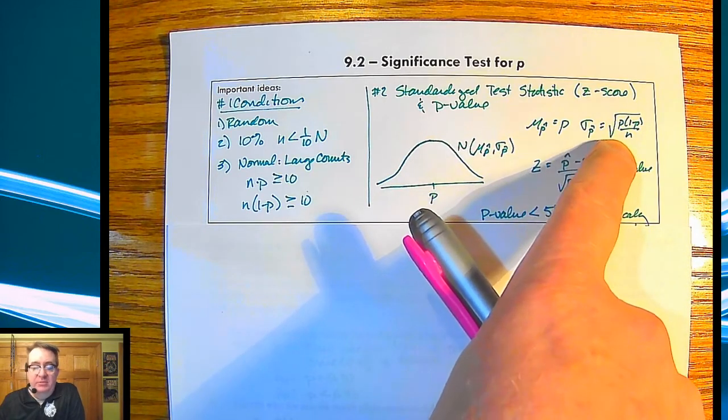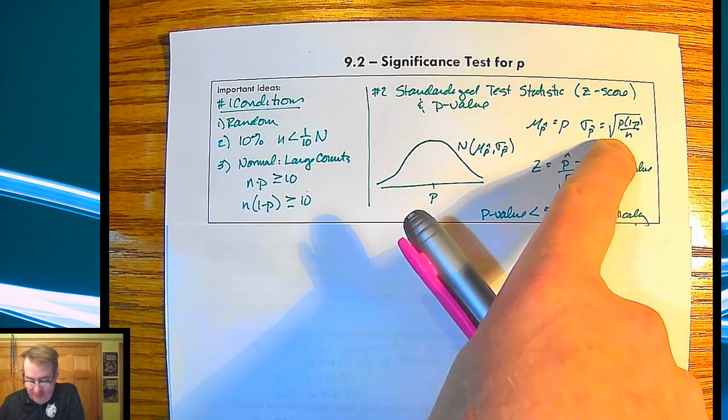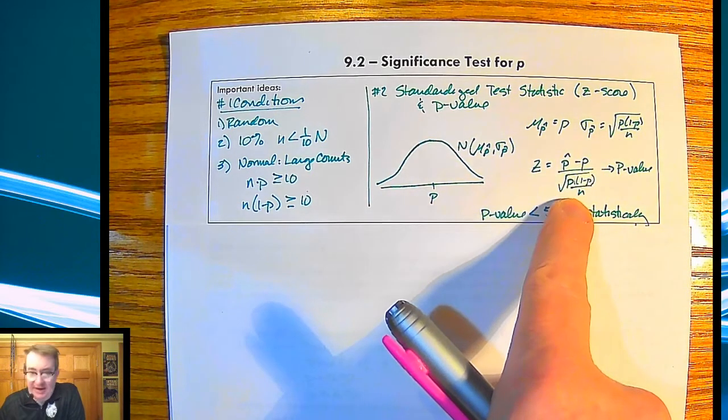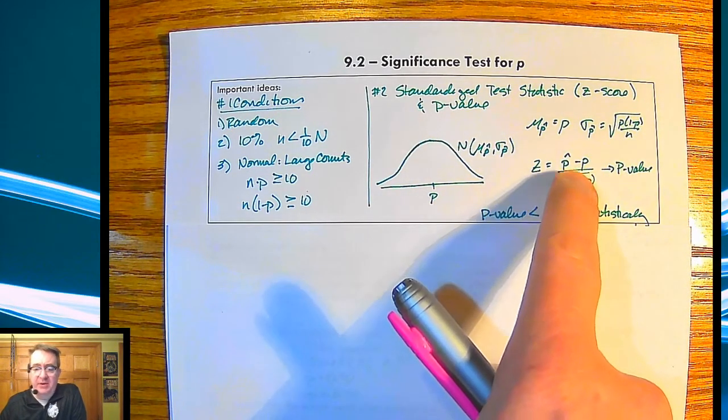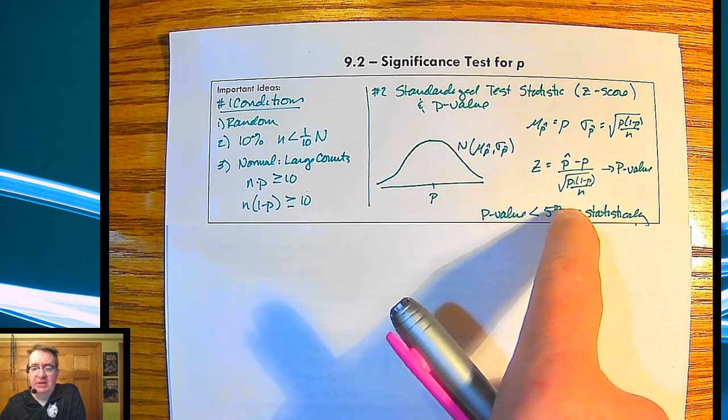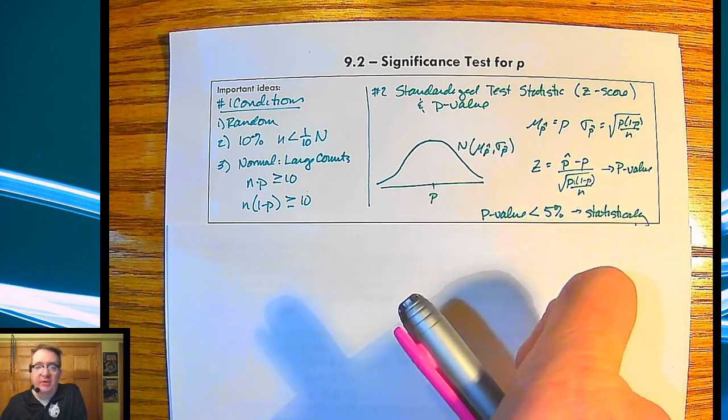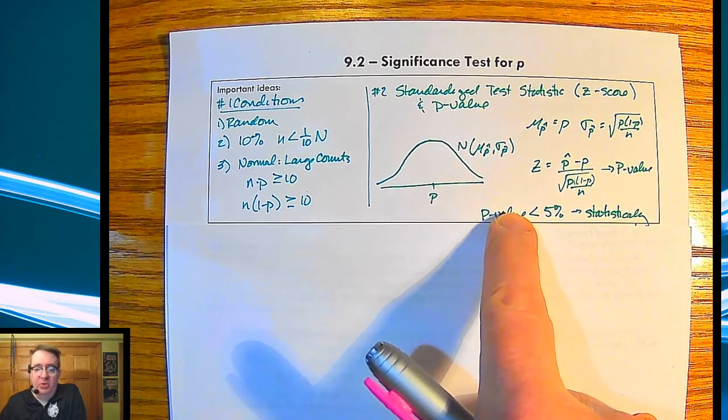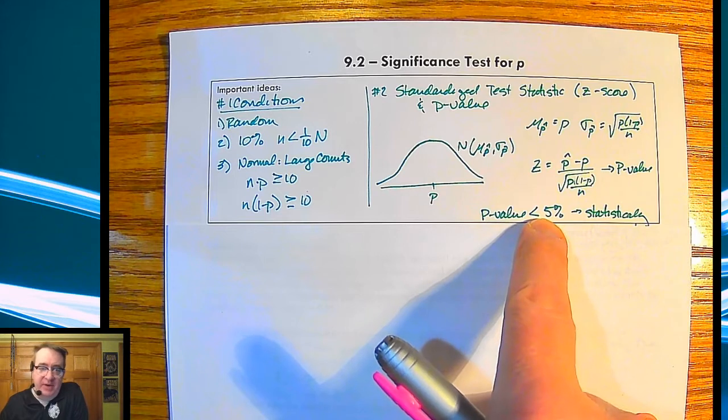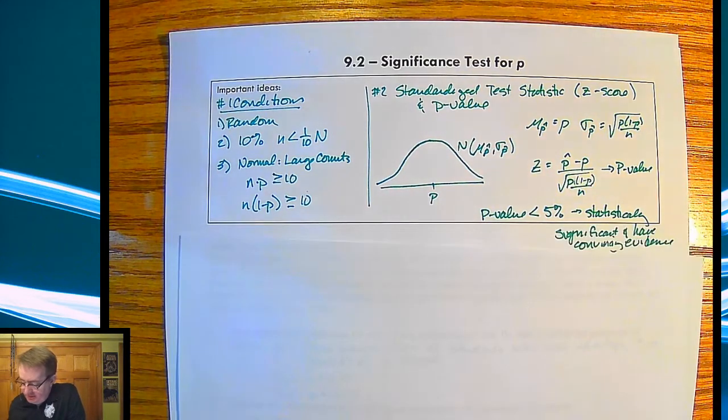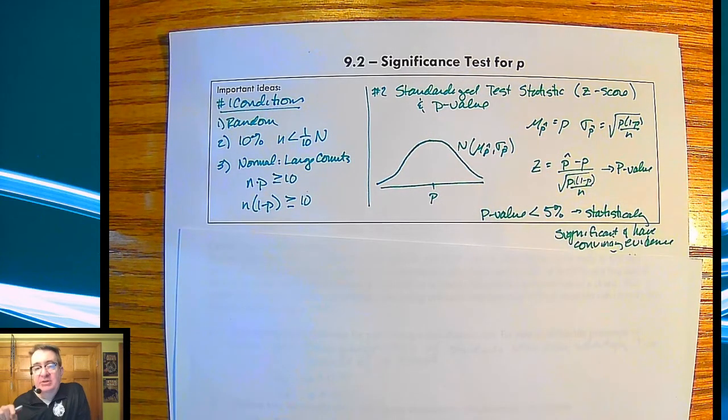Standard deviation is our standard formula for that. And then our Z score, nothing super surprising here. P hat minus P divided by our standard deviation. That's going to give us our P value. We take that P value, throw it in a normal CDF, we check out table A. And as long as that P value is less than 5%, that is going to be something statistically significant and give us convincing evidence about what's going on.